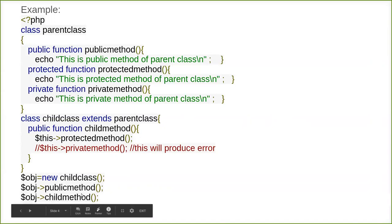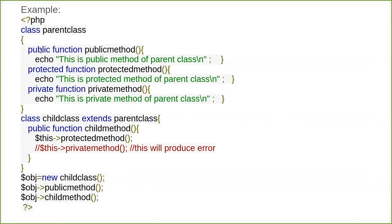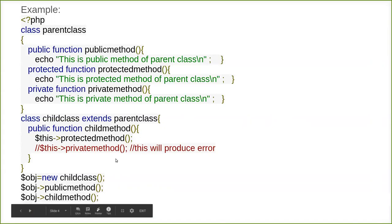So here calling the public method works. Then calling obj's child method also works, because that in turn calls the protected method. Since we can access a protected method inside a child there will be no error. But trying to call the protected method directly from outside will give you an error.